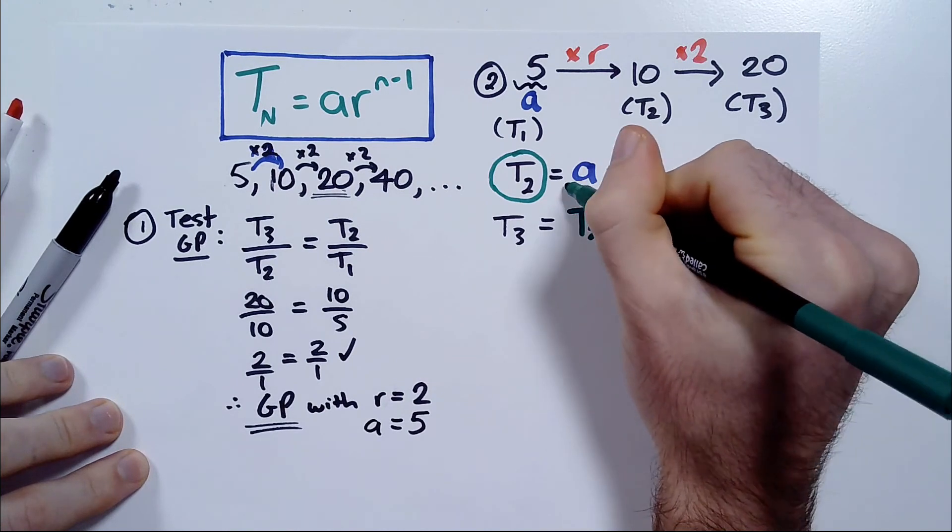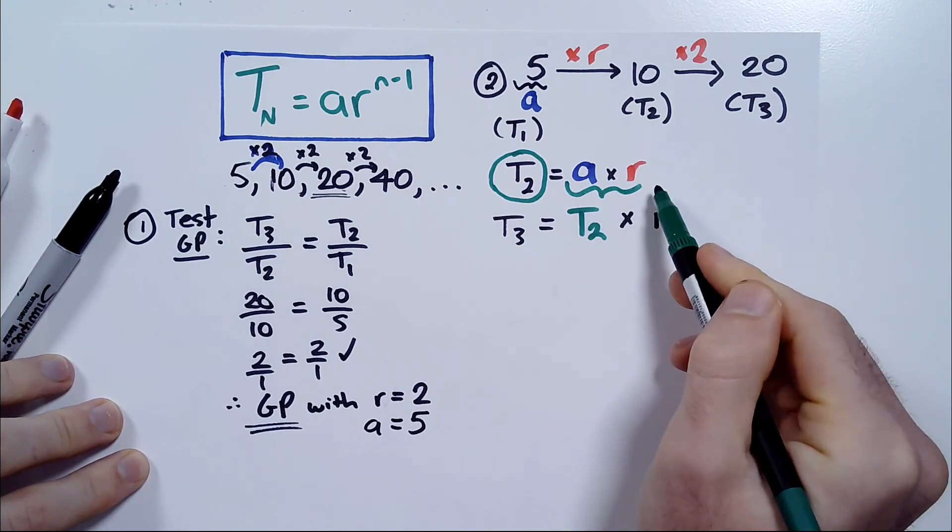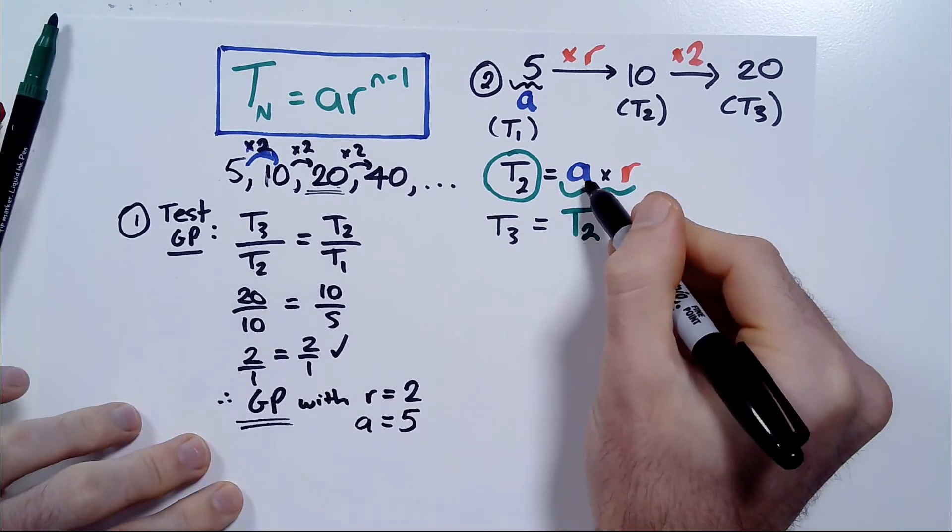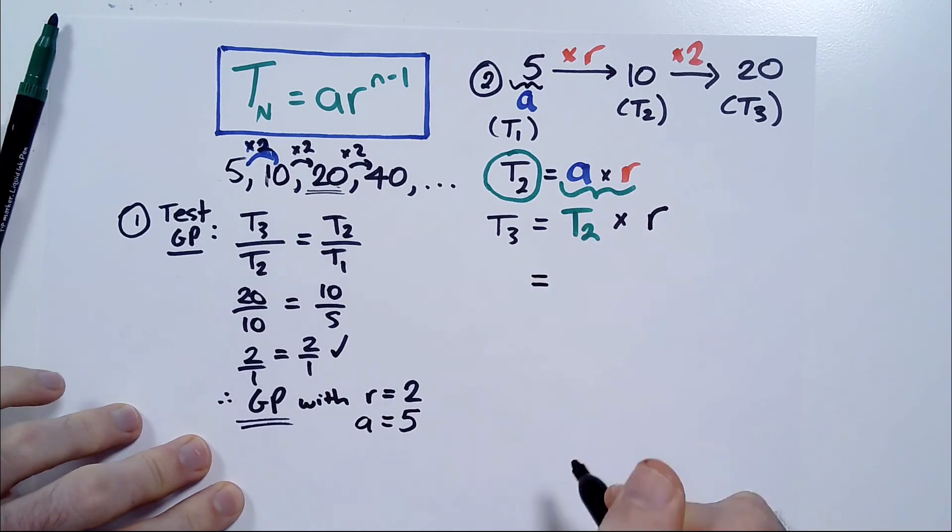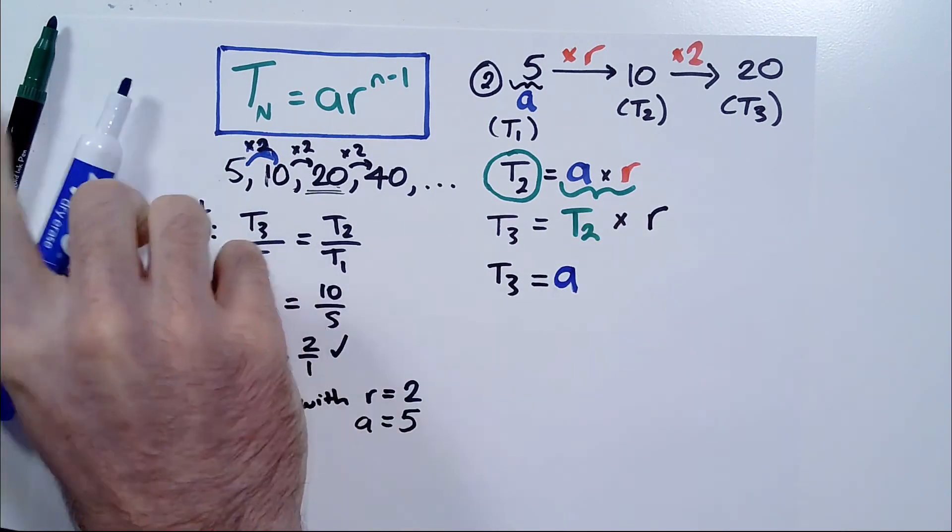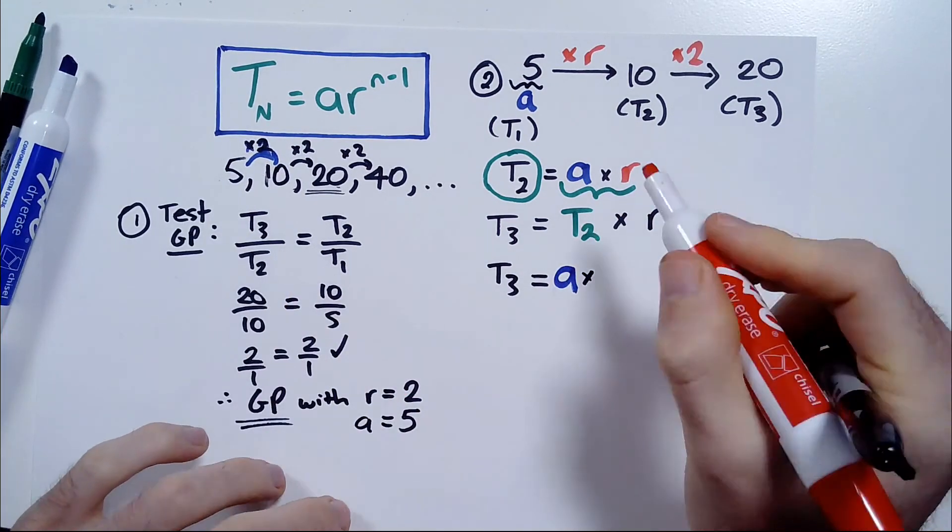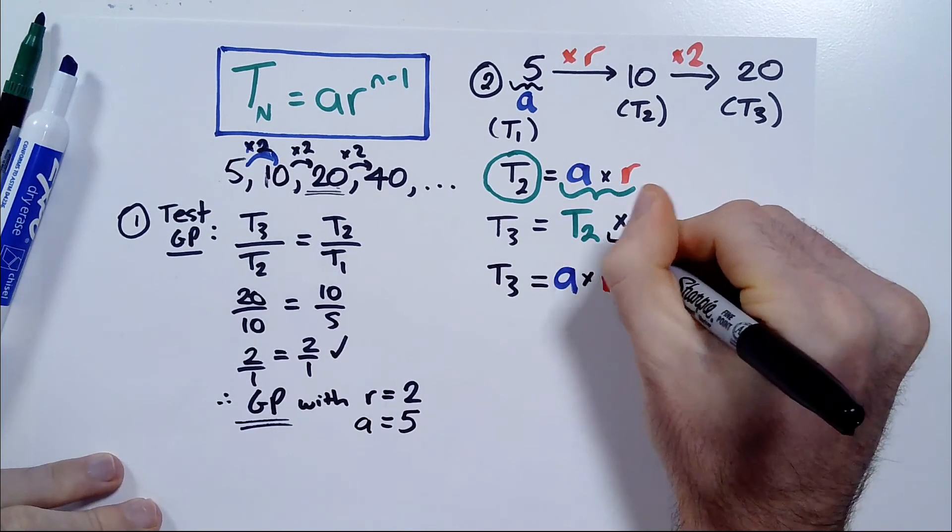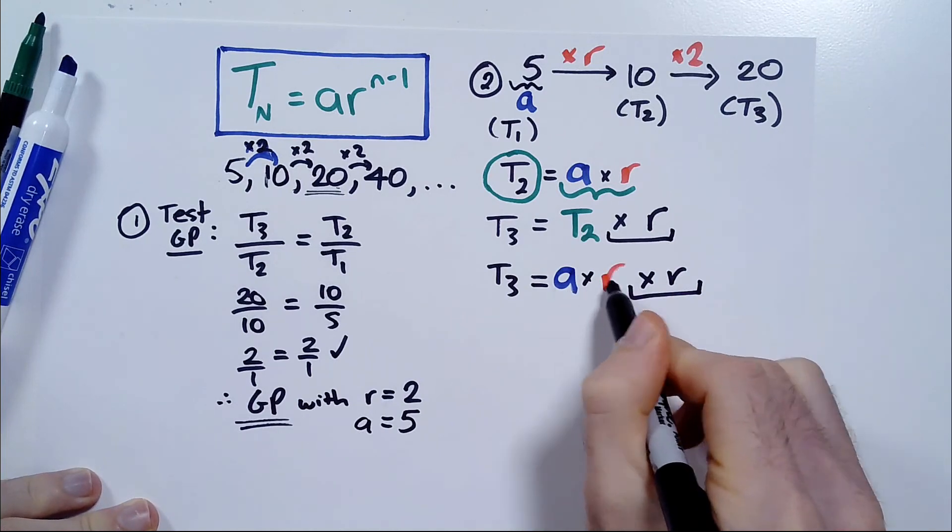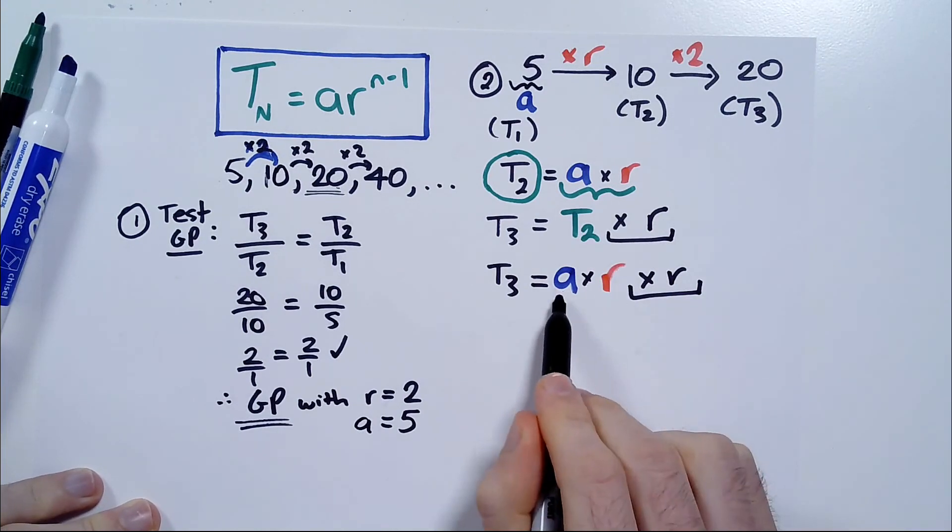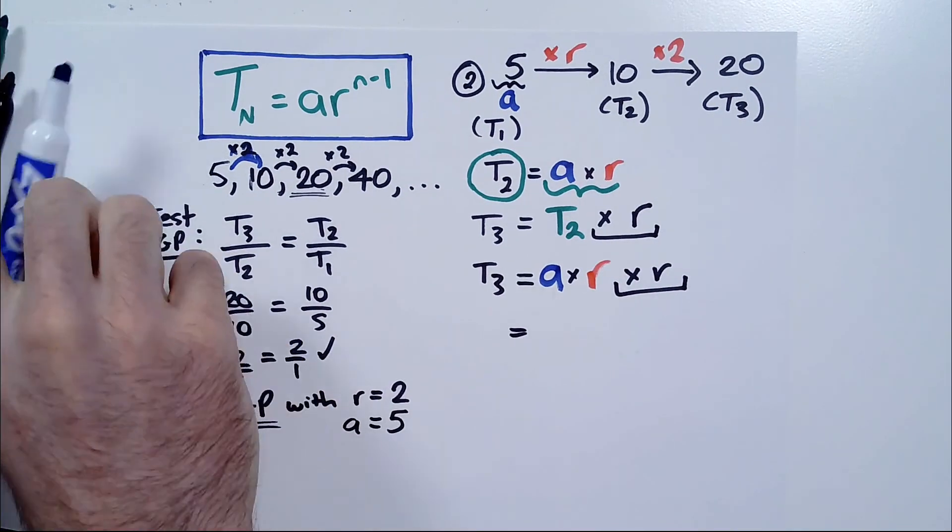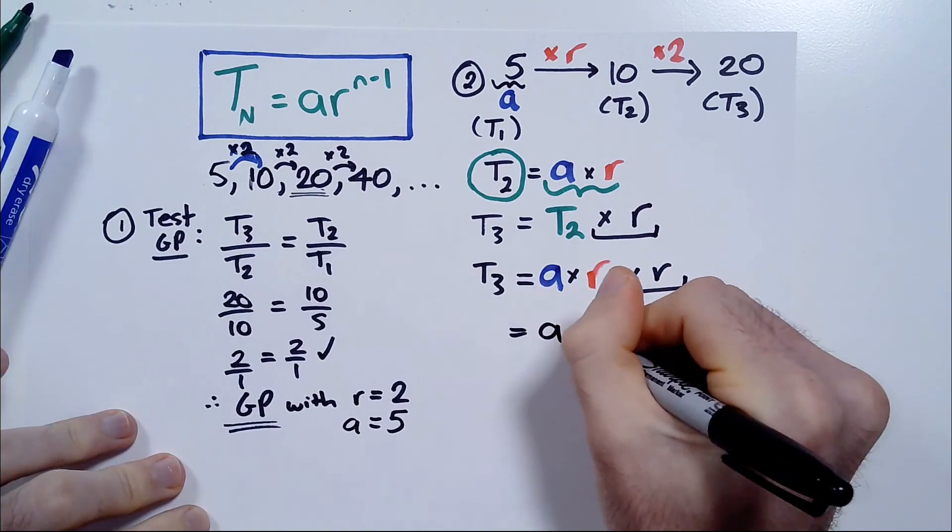Remember here that T2 is the same as A times R. T2 is A times R, as we already showed that. So, now I'm going to substitute A times R here where the T2 is because they're the same thing. So, T3 equals A times R, remember from above, A times R, and then times R again because that's this extended part. Now, if I simplify this, A times R times R is just AR squared. Okay, so we have T3 equals AR squared.